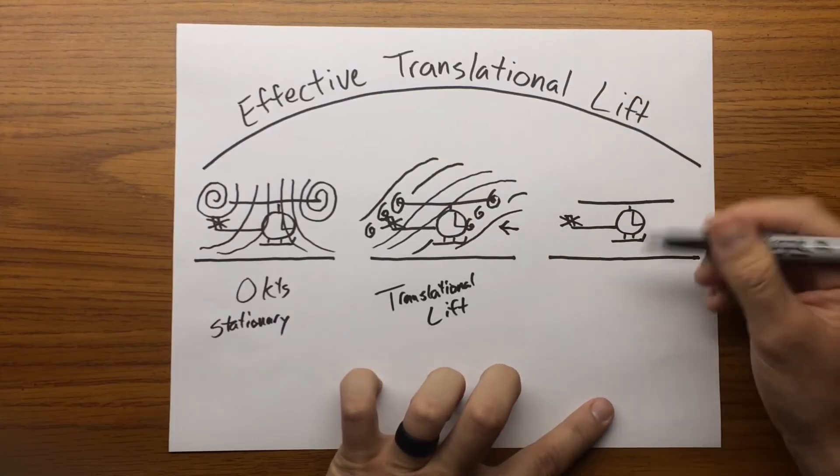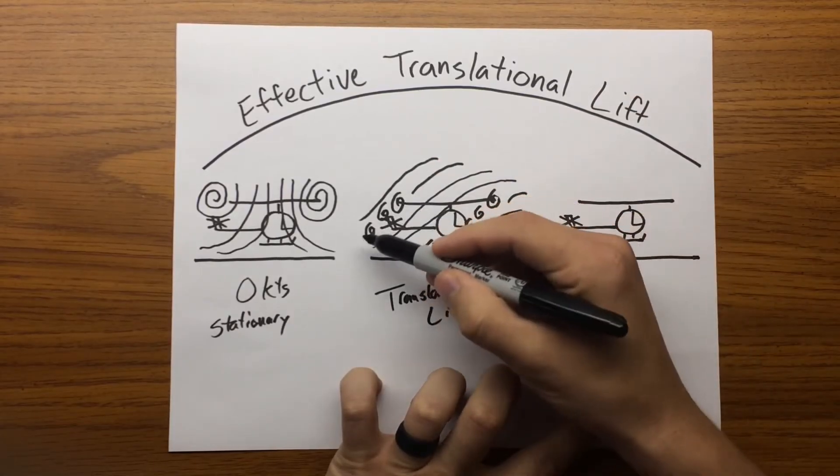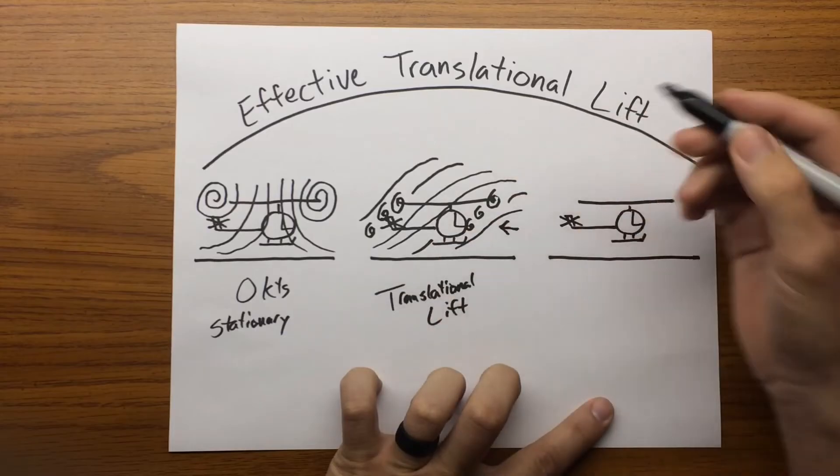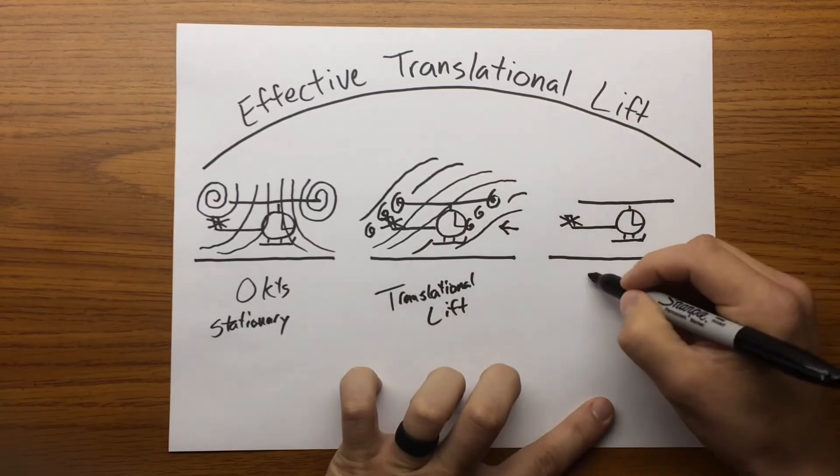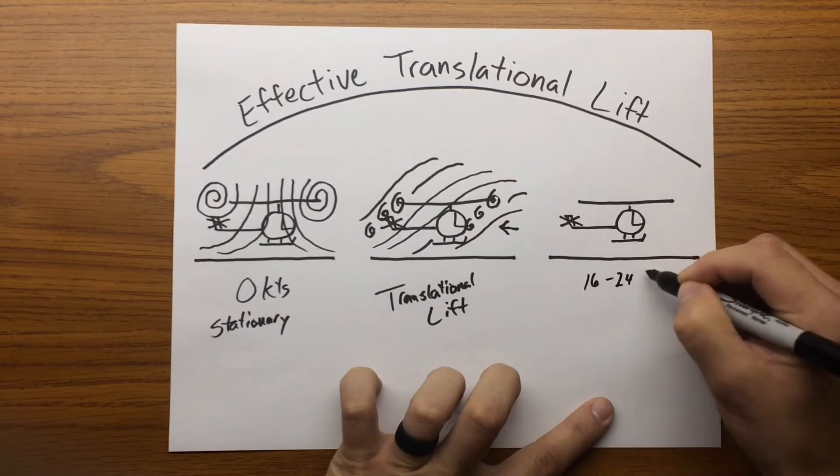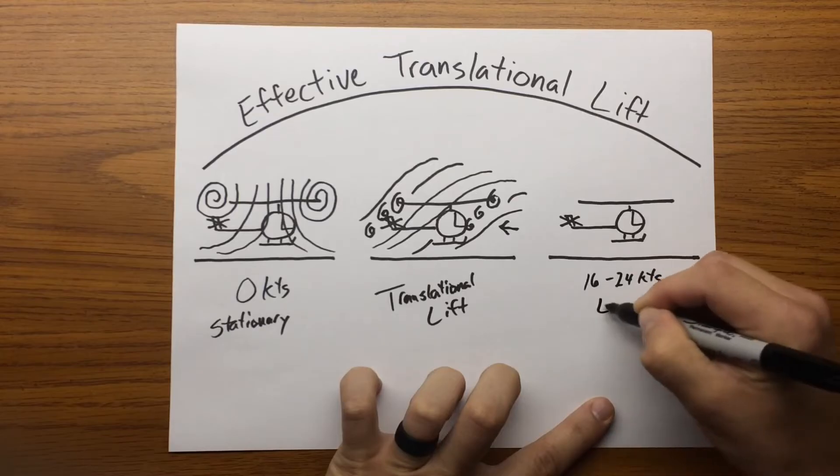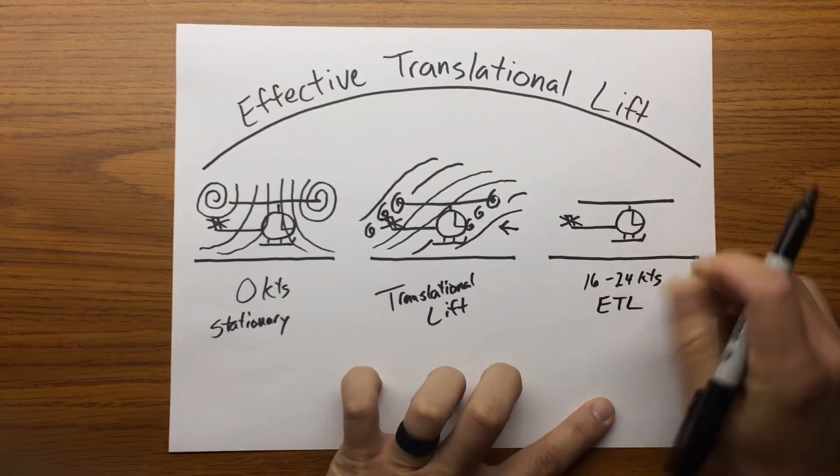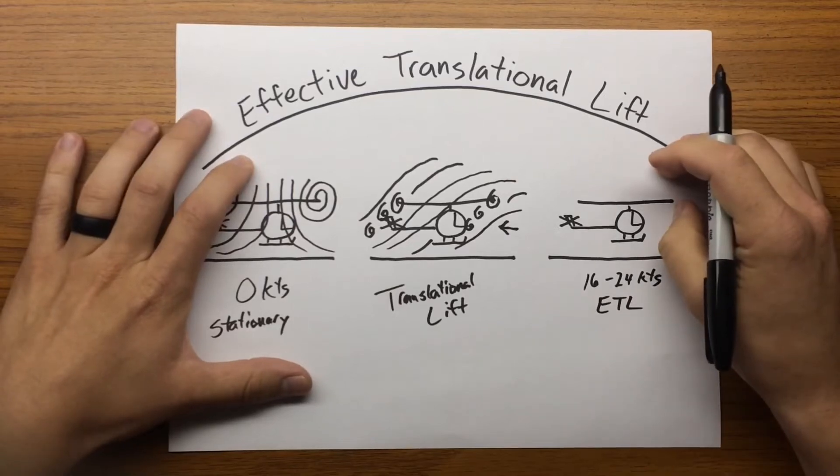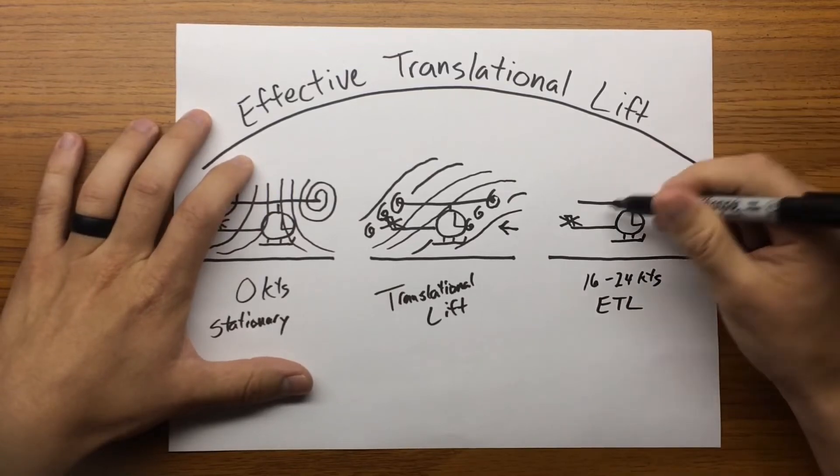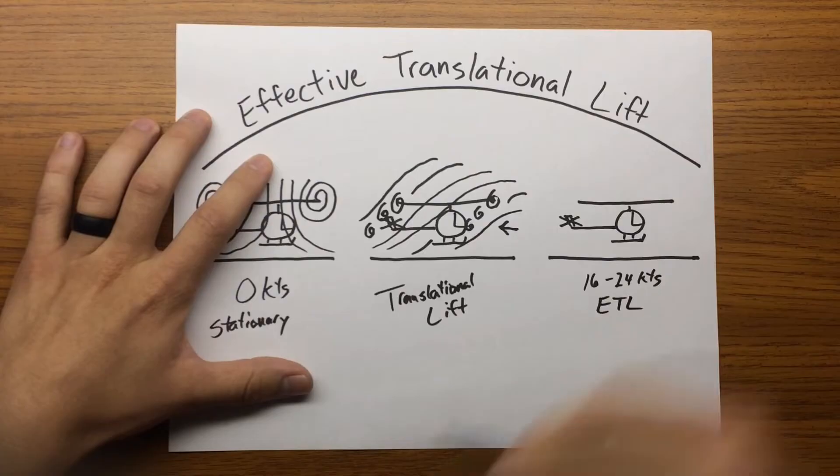Now, once we get to a point, we're going to actually outrun these vortices and be operating in a clean air environment. So where that happens is around 16 to 24 knots. We're going to go through effective translational lift. Now, this 16 to 24 knots depends on the blade size, the area, the RPM, and the rotor system.